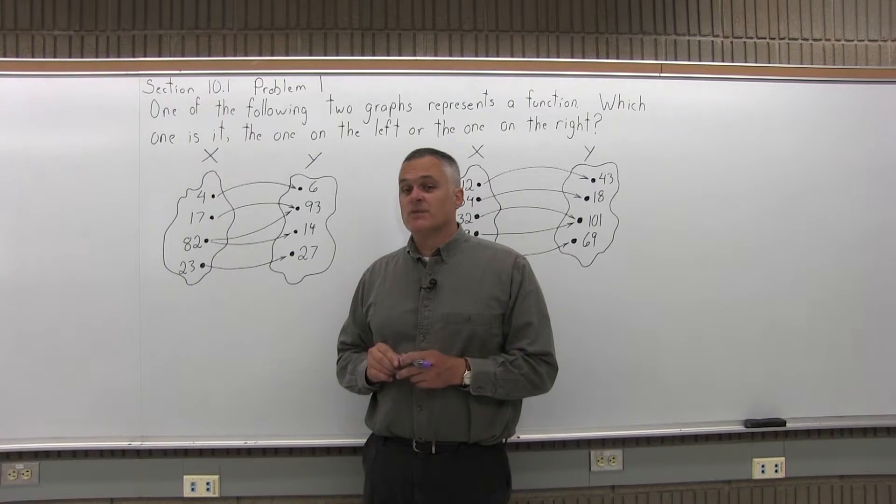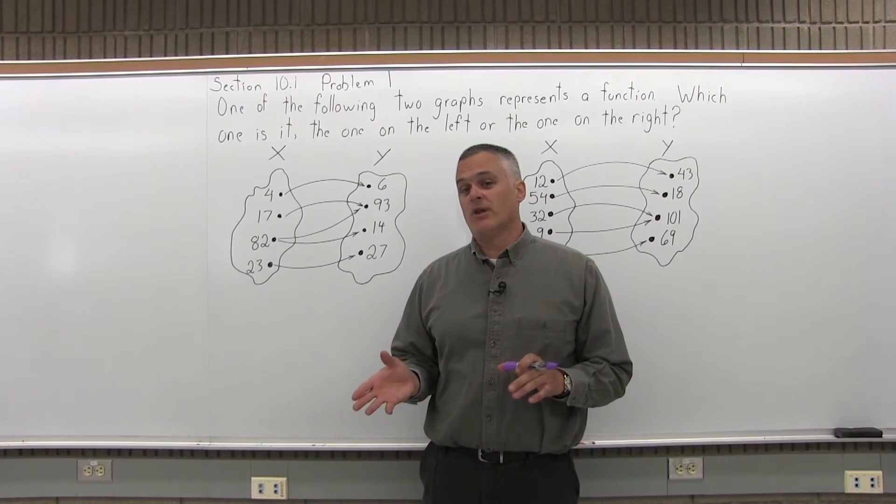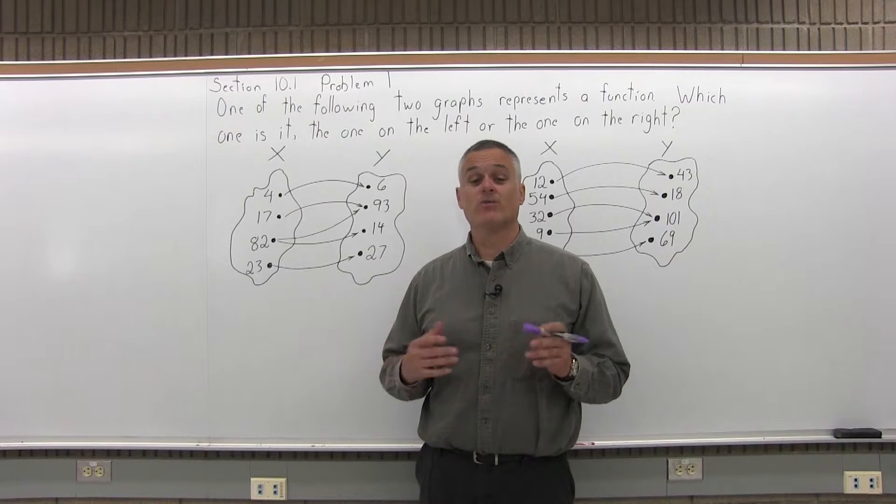For a function that relates mothers and daughters, the daughter has to be the input because the daughter will have only one mother. If you put the mother in as an input, some mothers have more than one daughter. You break that one rule.